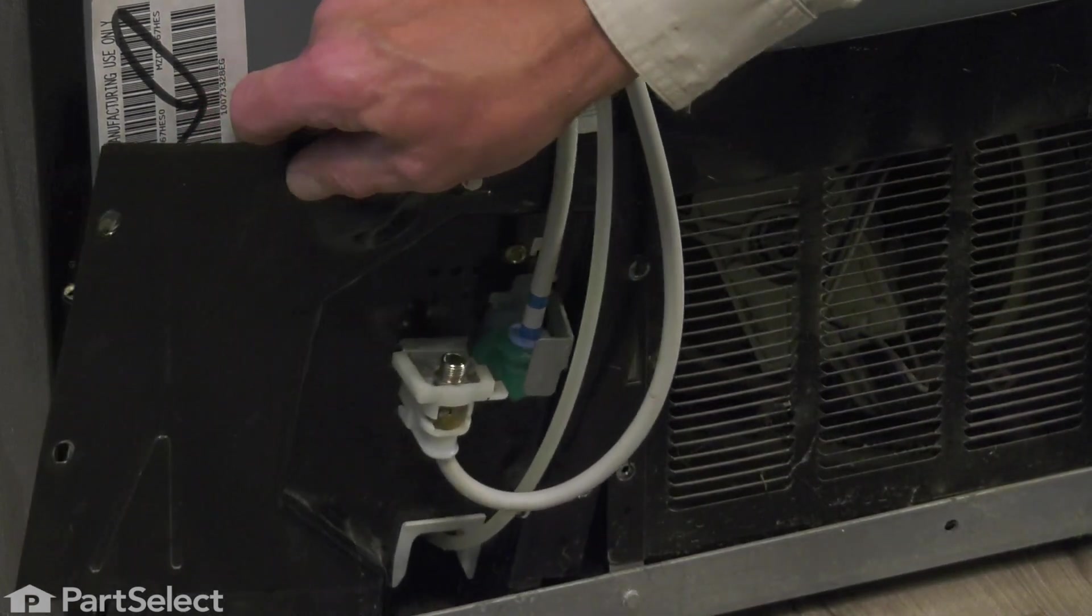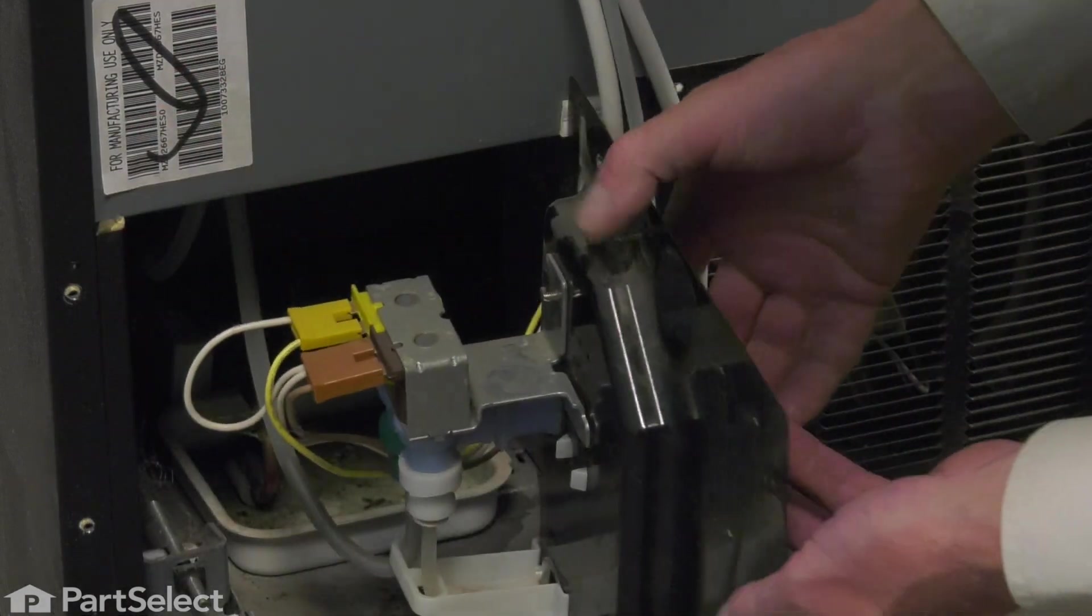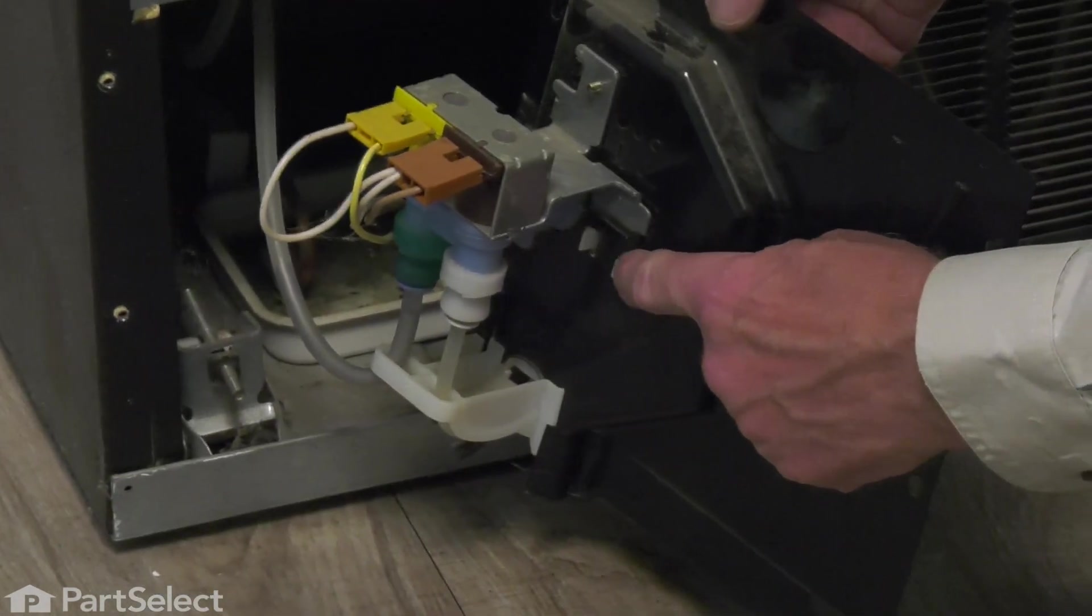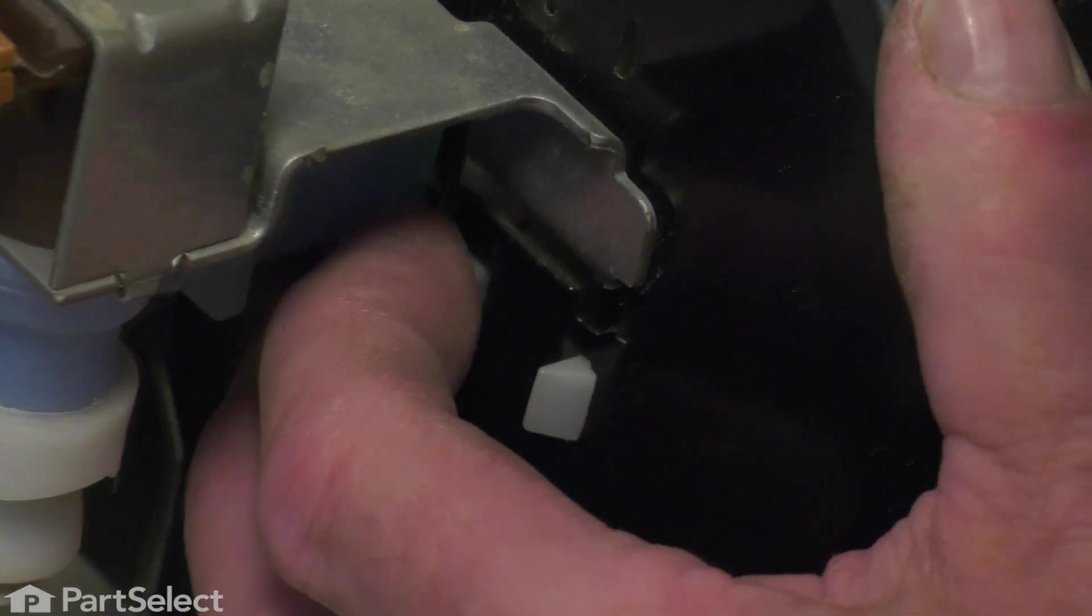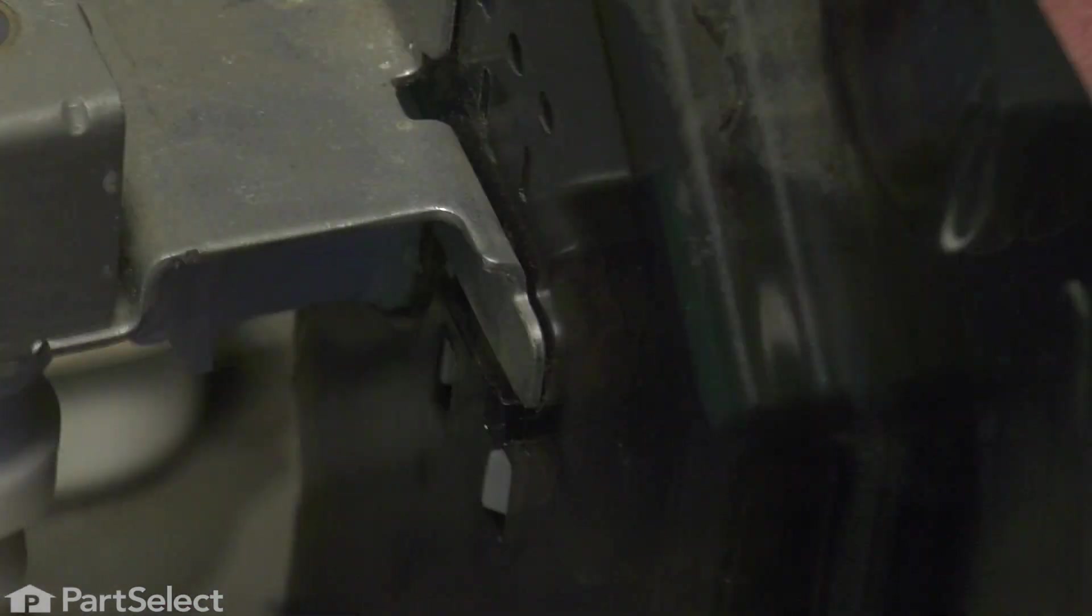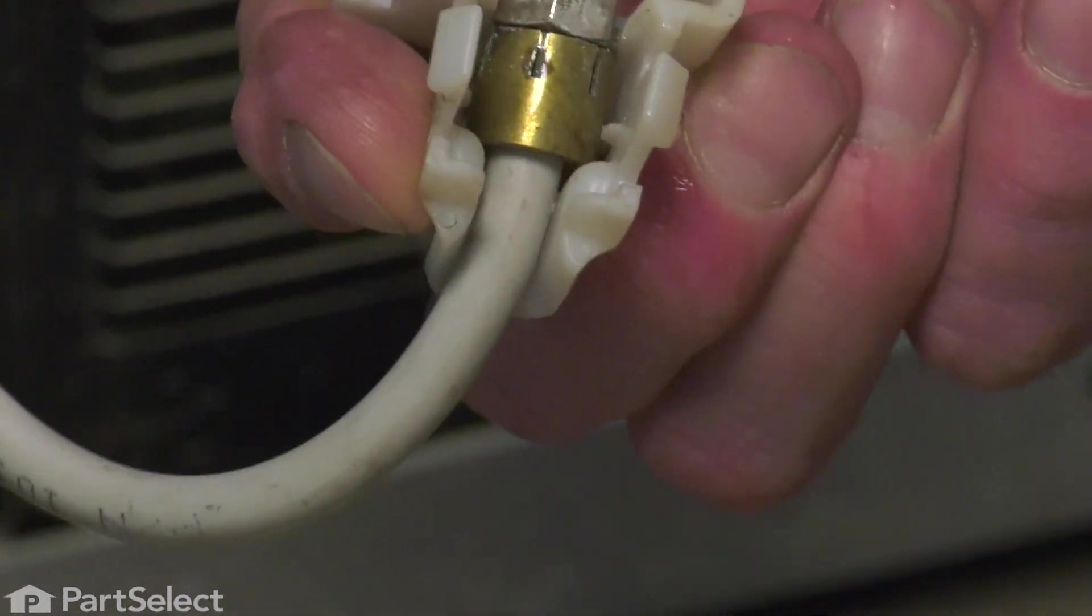Next, we'll lift that bracket out of the back of the refrigerator and just pivot that around enough until we can see these two clips there on the backside of this plastic housing. We're going to depress those clips and pull that housing towards us. We can then slide that housing off the end of that hose. We'll just take note how that sits in there.